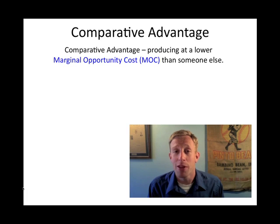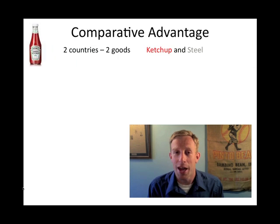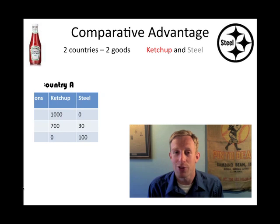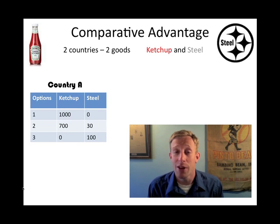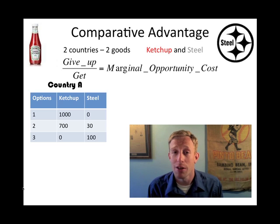We buy things from countries who can produce them more cheaply because we don't have to pay as much for it. Let's take a look at an example. Let's say we have two countries, and they can both produce two goods: ketchup and steel. Country A has three production possibilities. They can produce 1,000 gallons of ketchup and zero steel, 700 gallons of ketchup and 30 units of steel, or no ketchup and 100 units of steel. If we want to find out what they have to give up as they change their production levels, we're essentially looking for the marginal opportunity cost — we take what you give up and divide it by what you get.